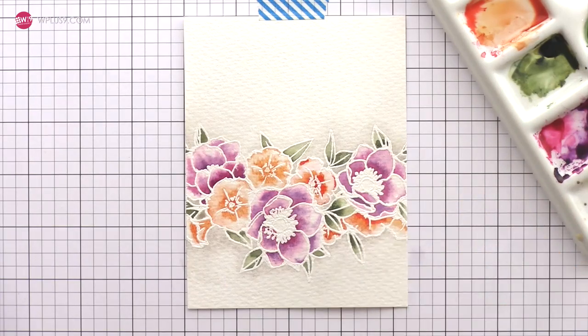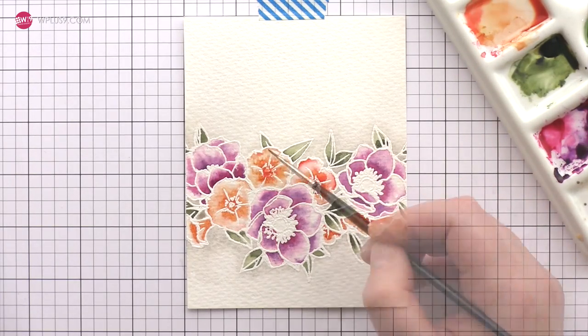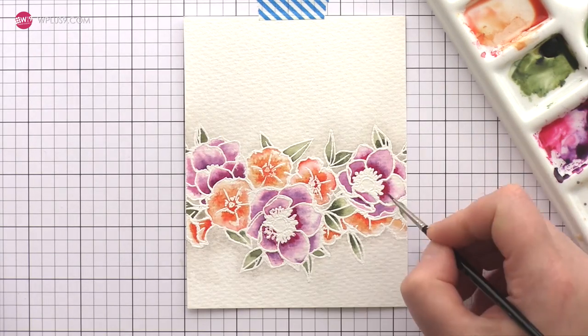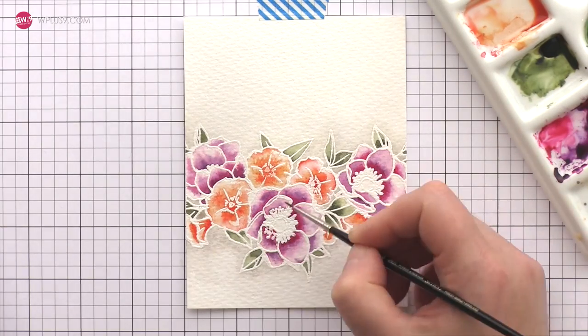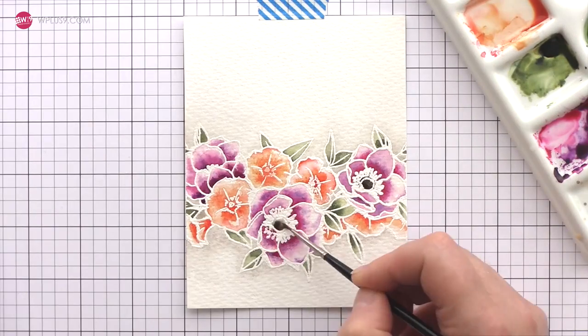I've used my heat tool to dry off the first layer of color and now I'm adding a second layer of color using deeper tones to add more dimension by darkening the shadows. Again, I'm using a damp brush to soften the edges so I don't get any harsh lines. For the center of the anemones I used a concentrated sepia and then added some yellow to one side to give variation.